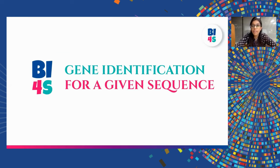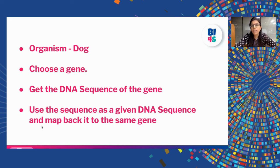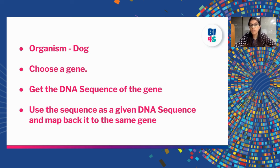As we already discussed in our previous lecture, there could be multiple scenarios. You could already know the organism from which you want to find a particular gene, then choose a gene and get the DNA sequence of that gene. Or you could have a specific gene in mind and want the DNA sequence of that particular gene. We will look at both scenarios and also use a given DNA sequence to map it back and find out which gene it belongs to.